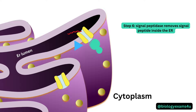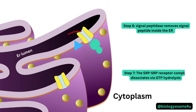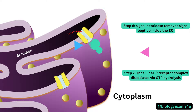Step seven: the SRP–receptor complex dissociates via GTP hydrolysis, and the cycle of SRP-mediated protein translocation to the ER membrane continues.